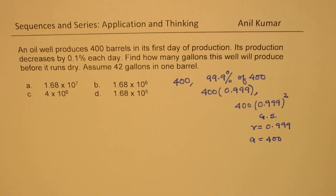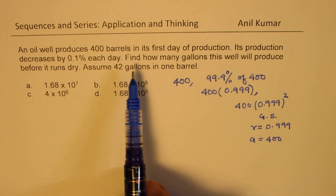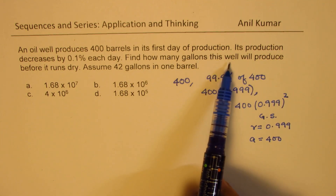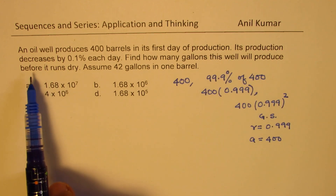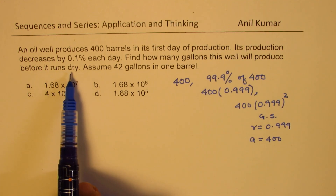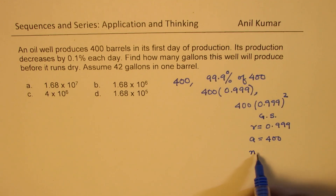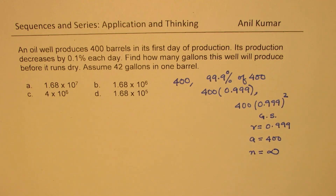That is how you can understand the situation and then use the formula to find the answer. One important thing here is: find how many gallons this well will produce before it runs dry — that means what should be the value of N. So we will take N to be infinitely large.